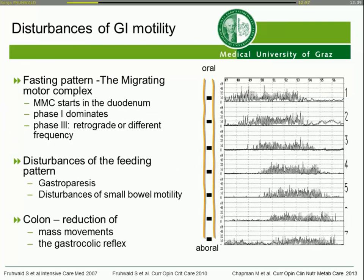We have disturbances of GI motility. There is a problem with our fasting pattern — the migrating motor complex (MMC), called the housekeeper because it expels food remnants from the gut into the colon to prevent bacterial overgrowth. In critically ill patients, it does not start properly in the stomach; it has a prolonged and dominating phase one, the period of quiescence, and phase three often runs retrograde back from the colon to the stomach.